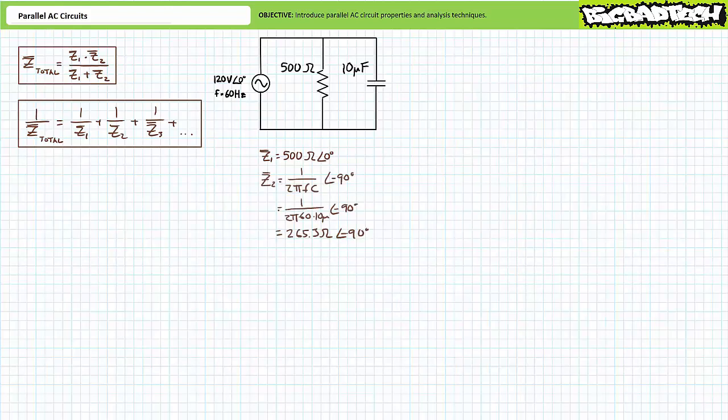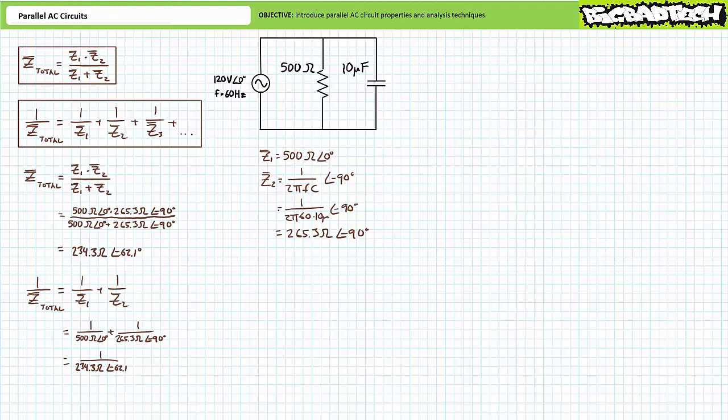Note Z1 is pointed entirely in the horizontal positive real direction. The complex impedance of the 10 microfarad capacitor at an excitation frequency of 60 hertz is roughly 265.3 ohms at an angle of negative 90 degrees. Let's call this impedance Z2. Note Z2 points entirely in the vertical negative imaginary direction. Using either formula, total impedance for this parallel network equals 234.3 ohms at an angle of negative 62.1 degrees. The negative angle indicates the complete parallel circuit will exhibit largely capacitive behavior.